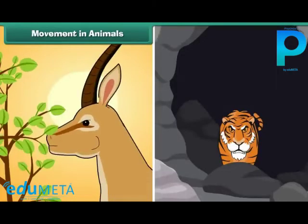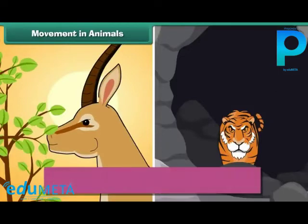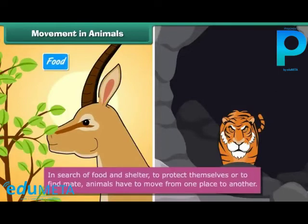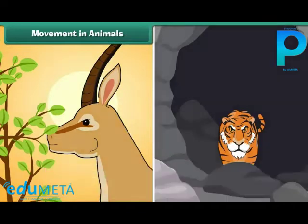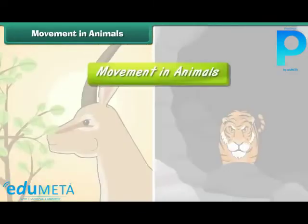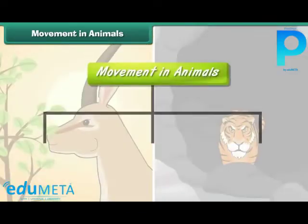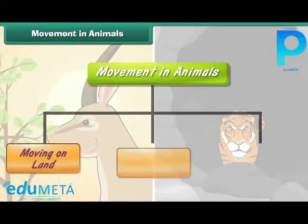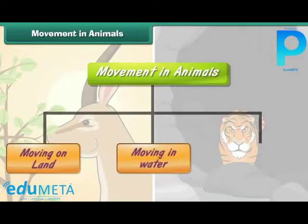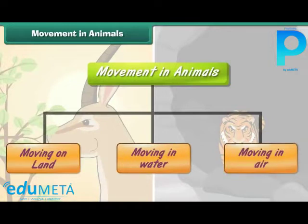Movement in animals. In search of food and shelter, to protect themselves, or to find a mate, animals have to move from one place to another. There are three different types of movement: moving on land, moving in water, and moving in air.